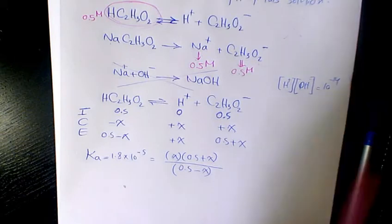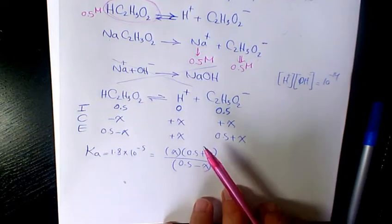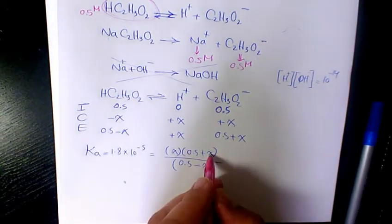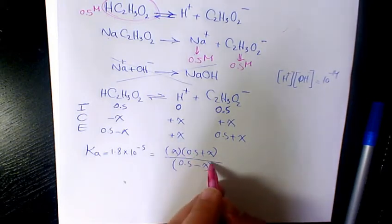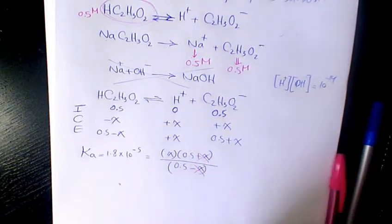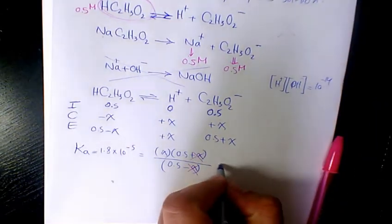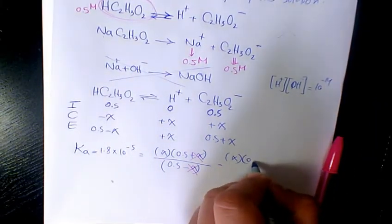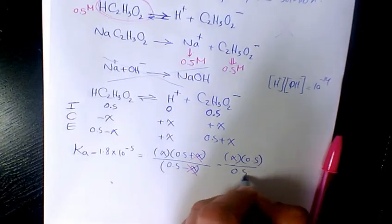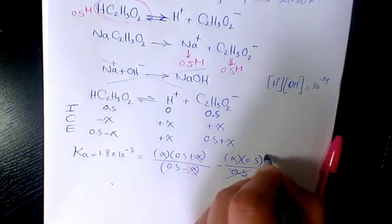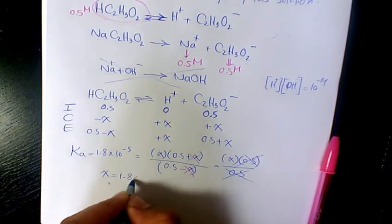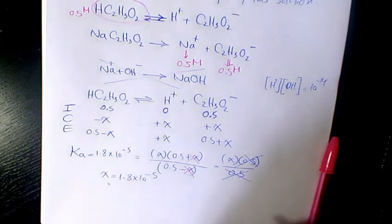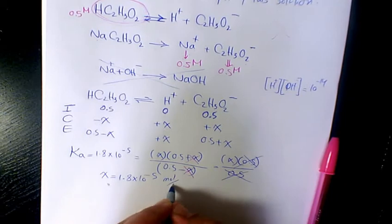Since X, which is related to dissociation, is insignificant compared to 0.5, we can neglect it. So we get X times 0.5 divided by 0.5 — these two cancel out. Therefore X equals 1.8 times 10 to the power of negative 5 mole per liter.